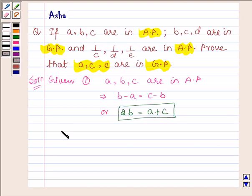Also we are given that B, C, and D are in GP. So this implies C upon B is equal to D upon C, or we can say that C squared is equal to BD.